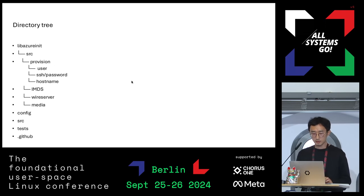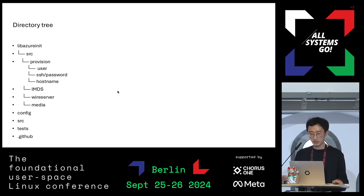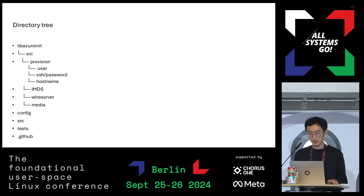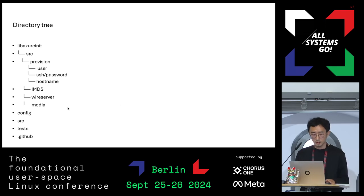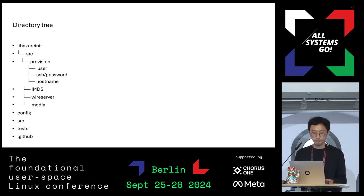IMDS communication is another big part of the library. IMDS is the Instance Metadata Service — inside an Azure VM you can simply access IMDS. The wire server is actually used only for Azure extensions, but it was also needed. The media component deals with local mounts and similar things for configuration. Config directory and test directory are usually for our end-to-end tests.